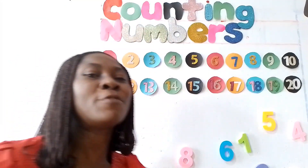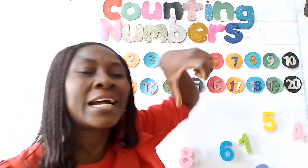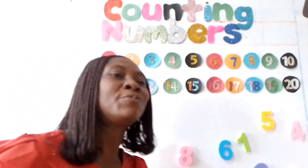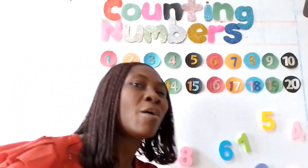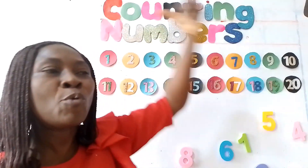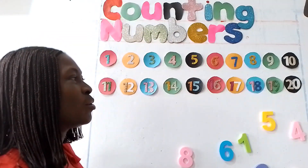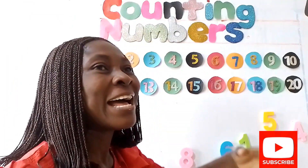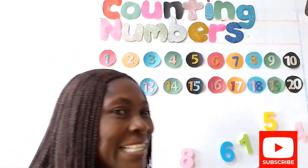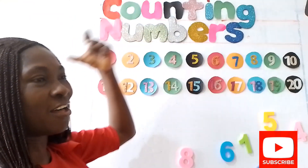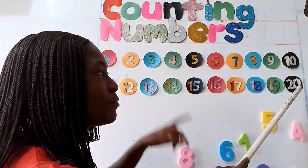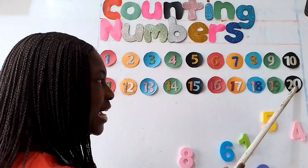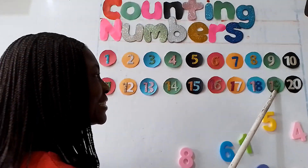What if we are counting from the back to the front? I mean, we are counting from down halfway. Now, that is what we call descending order. Now, we're going to count from 20 to 1.